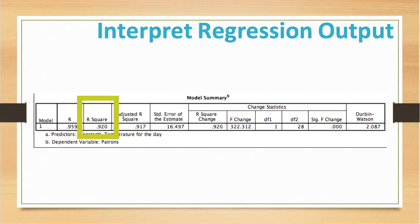R squared indicates the amount of change in the dependent variable, which is your number of patrons, that can be attributed to one independent variable, which is the temperature that day. The R squared value of .920 indicates that 92% of the variance in the number of patrons at the pool can be explained by the day's temperature.